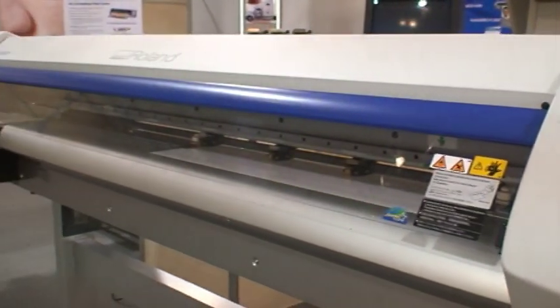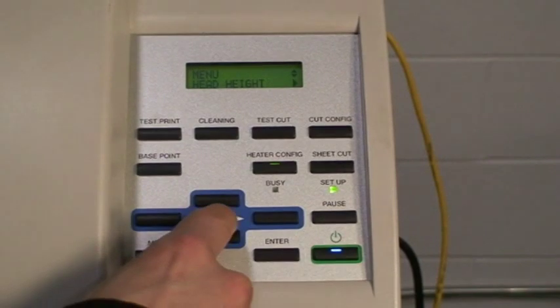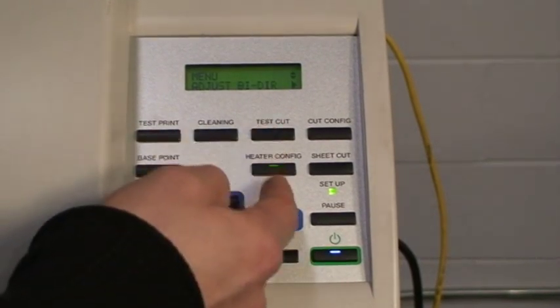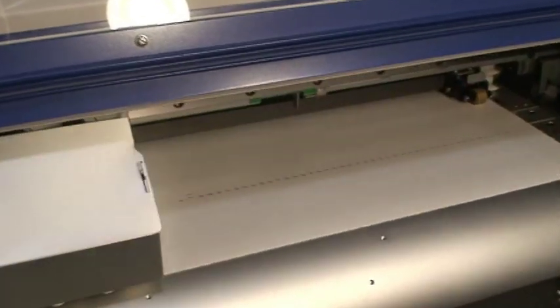Make sure a piece of media is loaded in the machine and press the menu button. Press the down key twice until bi-directional is on screen. Press the right arrow key once followed by the enter button to do a bi-directional adjustment test print.